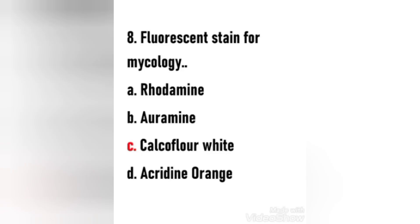Next question: Fluorescent stain for mycology — Rhodamine, Auramine, Calcofluor white, or Acridine orange? The right answer is option C, Calcofluor white. Calcofluor white is a fluorescent blue dye commonly used in microbiology laboratories for fungal identification. It binds to the chitin in the fungal cell wall and brightly fluoresces on exposure to ultraviolet light.